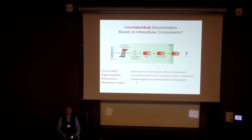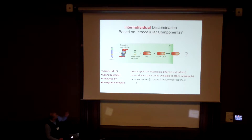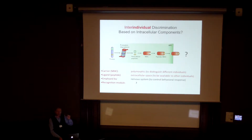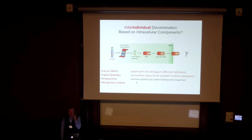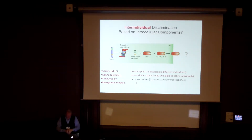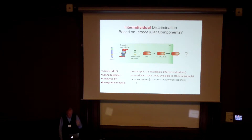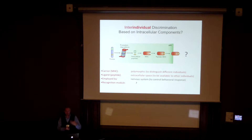We can translate this system into inter-individual discrimination, but it has to be slightly differently organized. The key thing is we need to bring the ligand into contact with the extracellular environment. For the immune system it makes sense to avoid collateral damage — the infected cell keeps the foreign antigen, otherwise it would kill cells that are not infected. But for inter-individual discrimination, the signal has to venture outside of the individual, entering the extracellular space. And since we're no longer talking about the immune system but about pre-zygotic mate selection, it has to be employed by the nervous system.